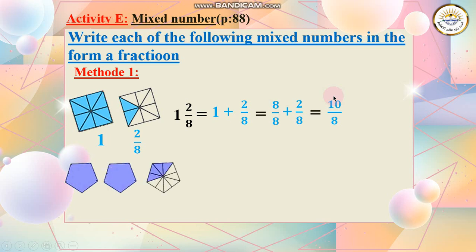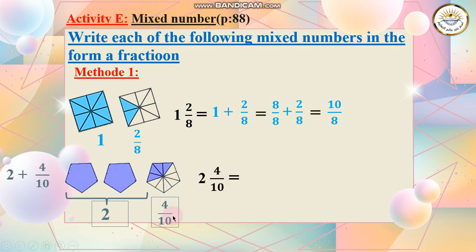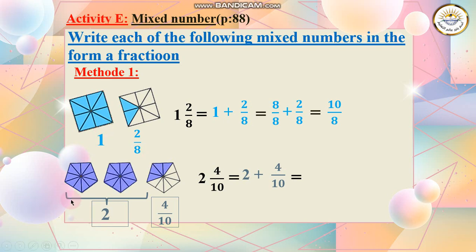Now I have these two forms. This form is divided into 10 parts. So I have here 2 whole parts and 4 over 10. So the number is 2 and 4 over 10. Now I write 2 plus 4 over 10. 2 is written as 20 over 10 because each part is divided into 10 small parts. So 20 over 10 plus 4 over 10 is 24 over 10.